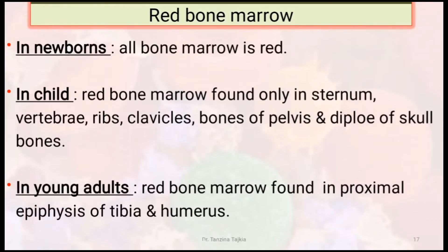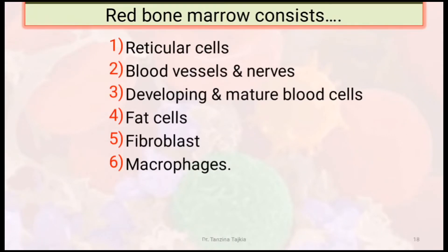In children, red bone marrow is found only in the sternum, vertebra, ribs, clavicle, bones of the pelvis, and skull bones. In young adults, red bone marrow is found in the proximal epiphysis of the tibia and humerus. Red bone marrow consists of reticular cells, blood vessels, developing and matured blood cells, fat cells, fibroblasts, and macrophages.